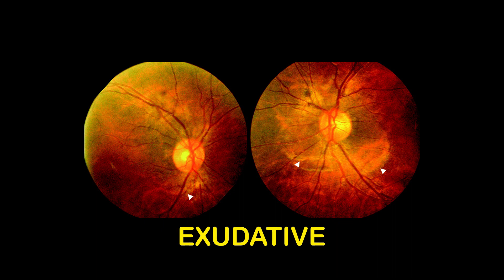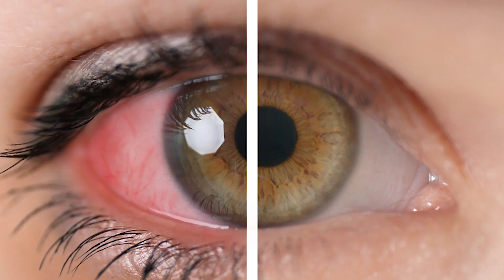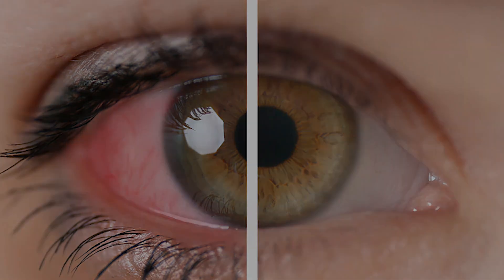Exudative retinal detachment occurs when fluid builds up behind the retina even though there's no retinal tear. As the fluid collects, it pushes your retina away. The main causes of fluid buildup are leaking blood vessels or swelling behind the eye, which can happen from causes such as uveitis.